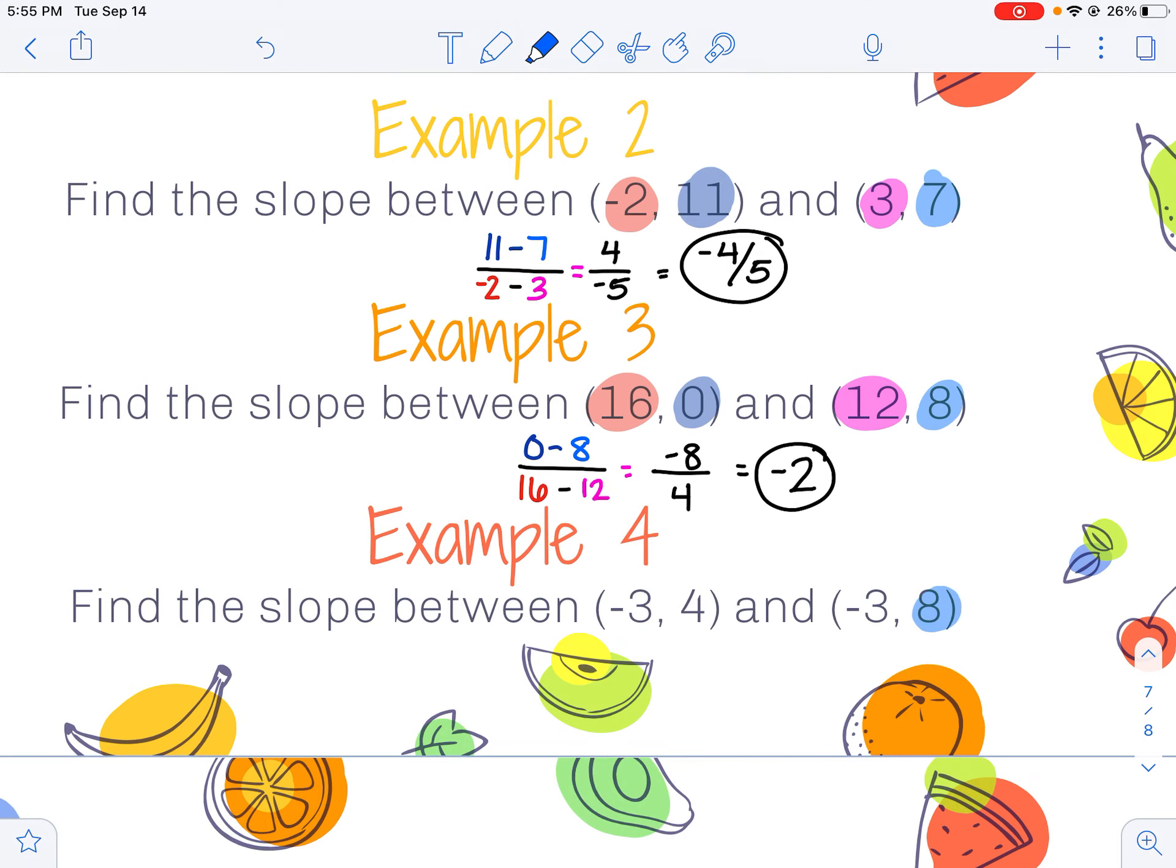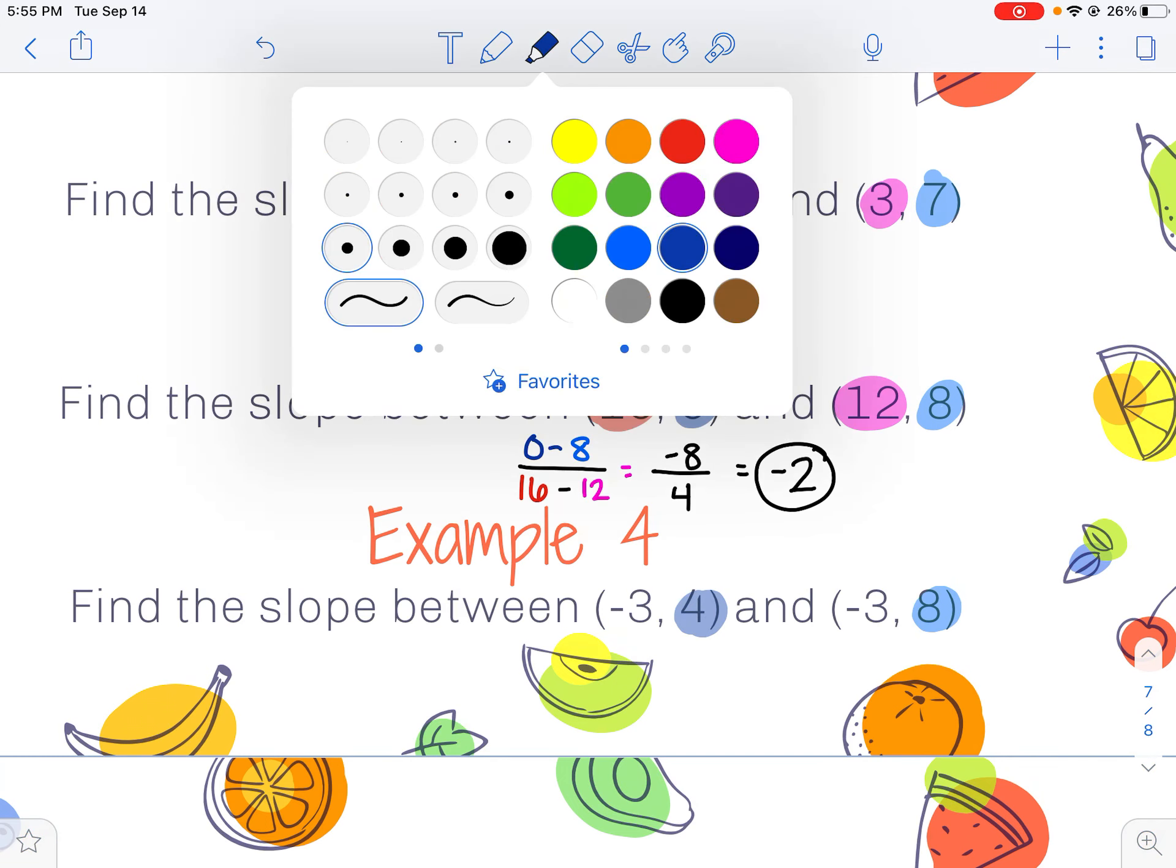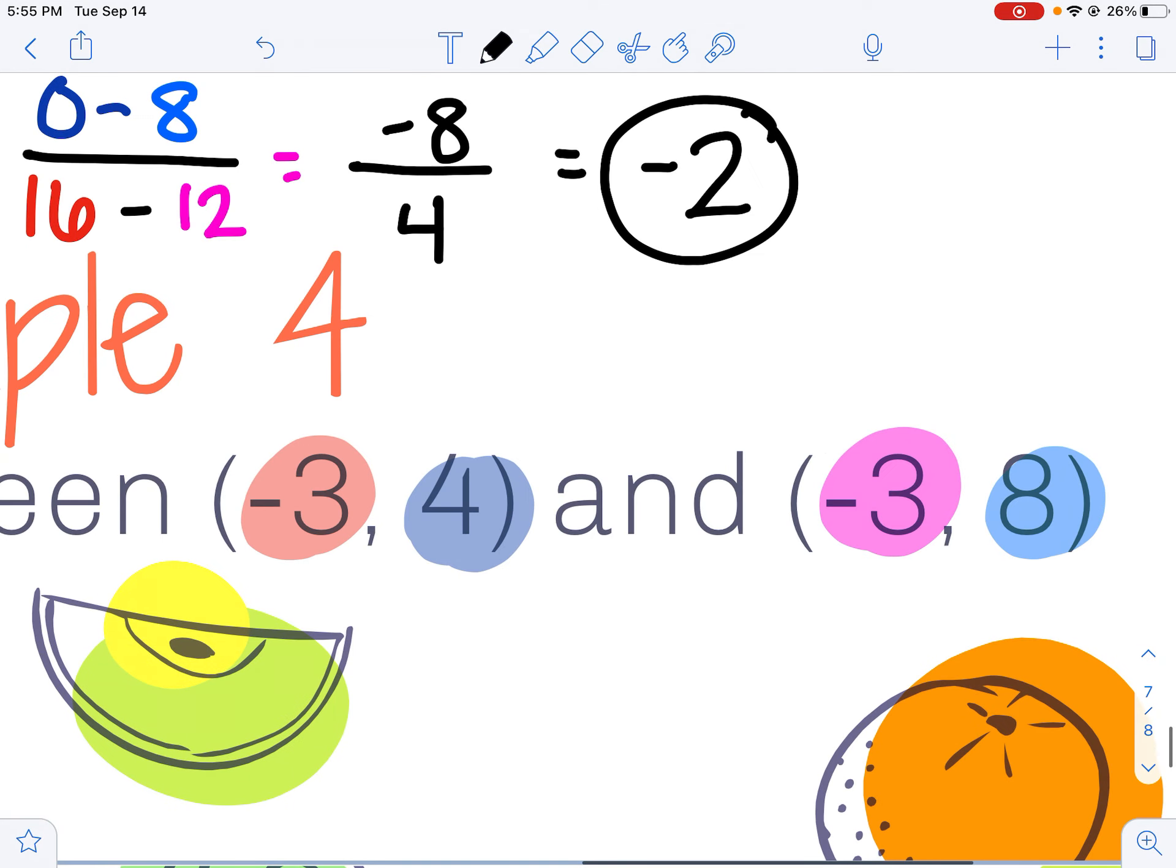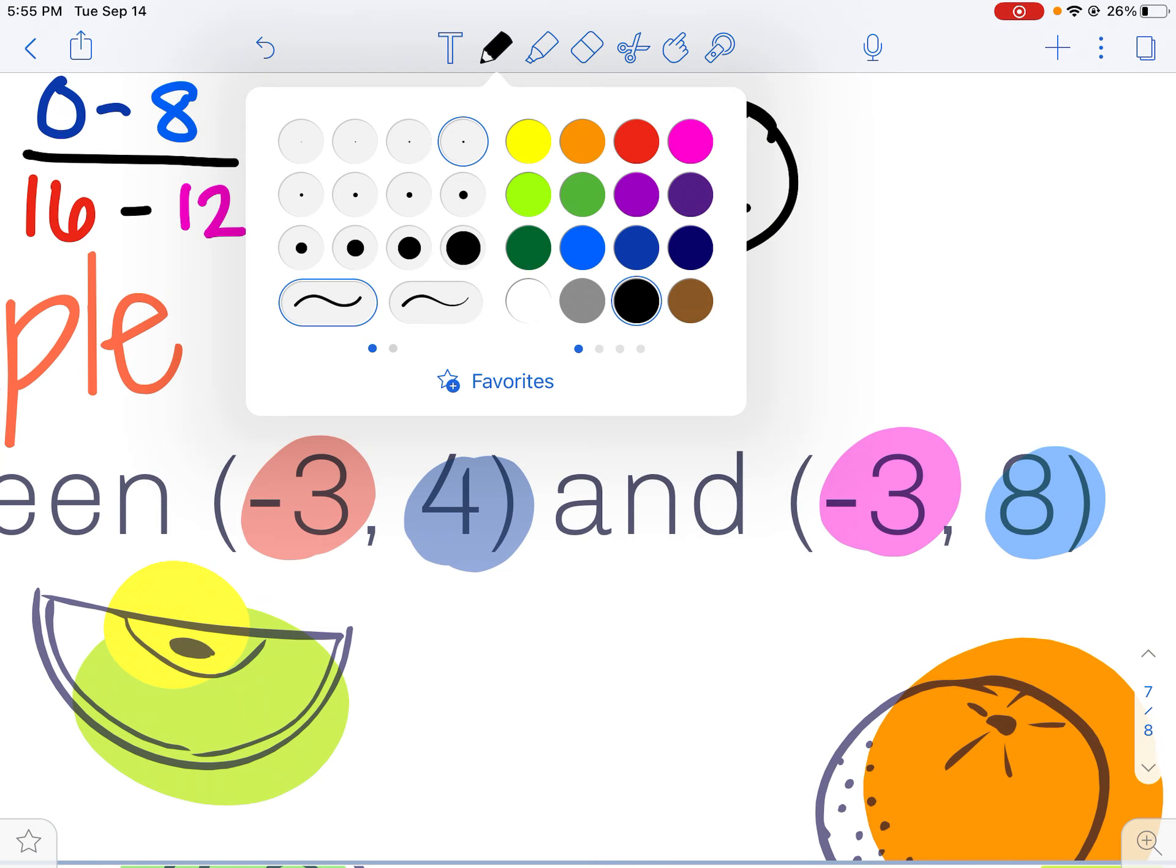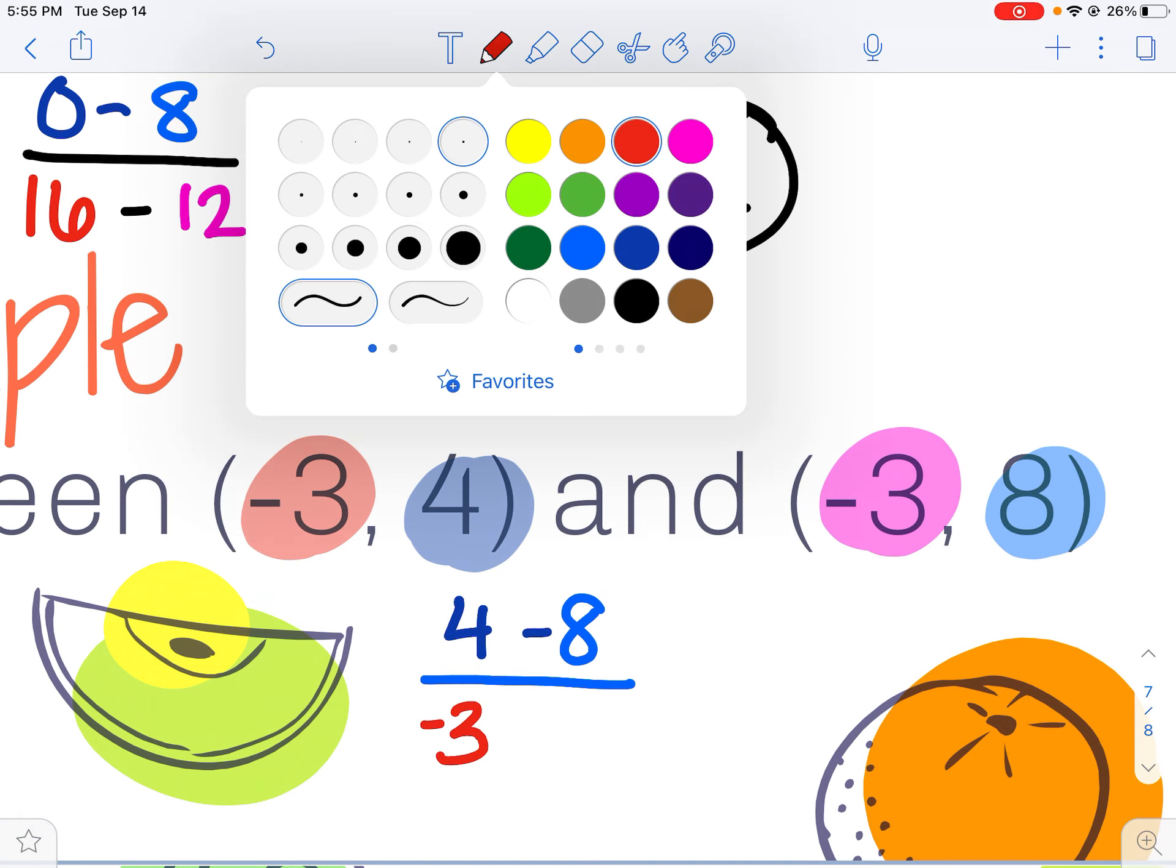Doing one more of those. Again, color coding real quick here. I'm taking my first y value, 4, minus my second y value, 8, and then I'm dividing it.